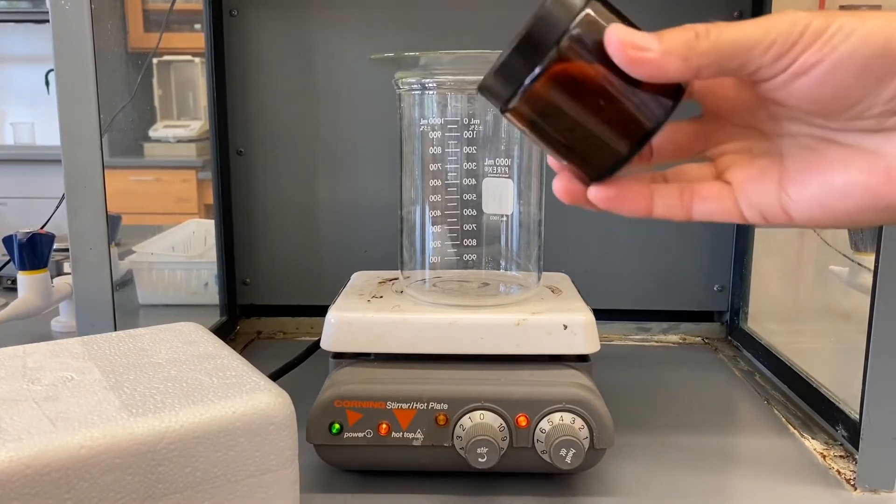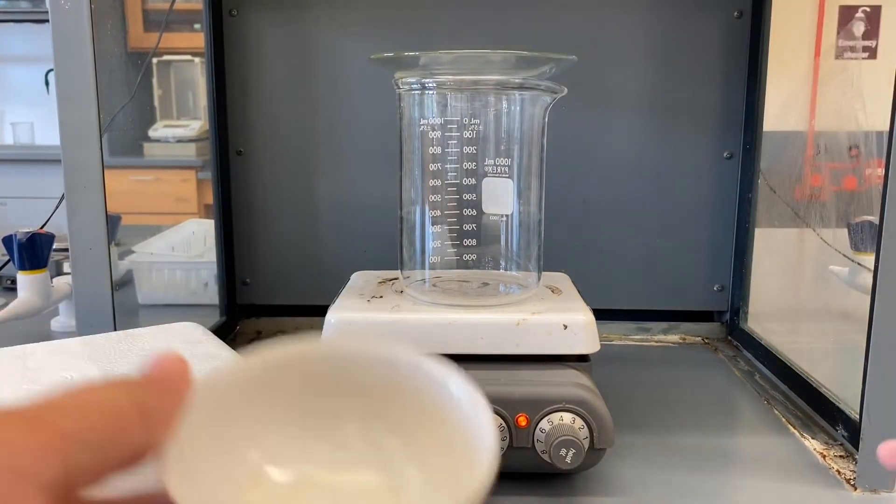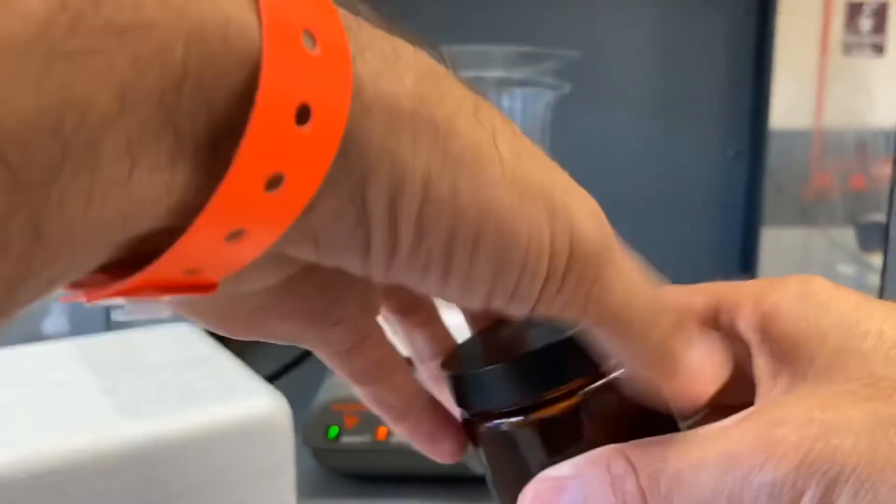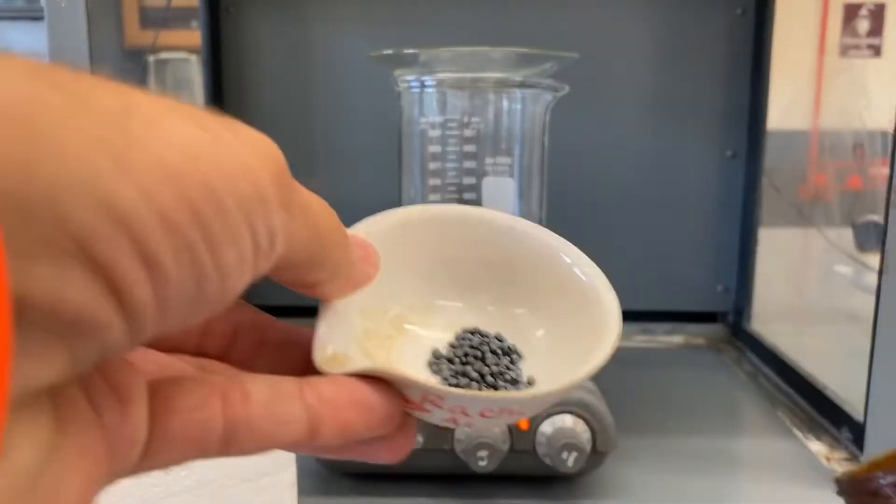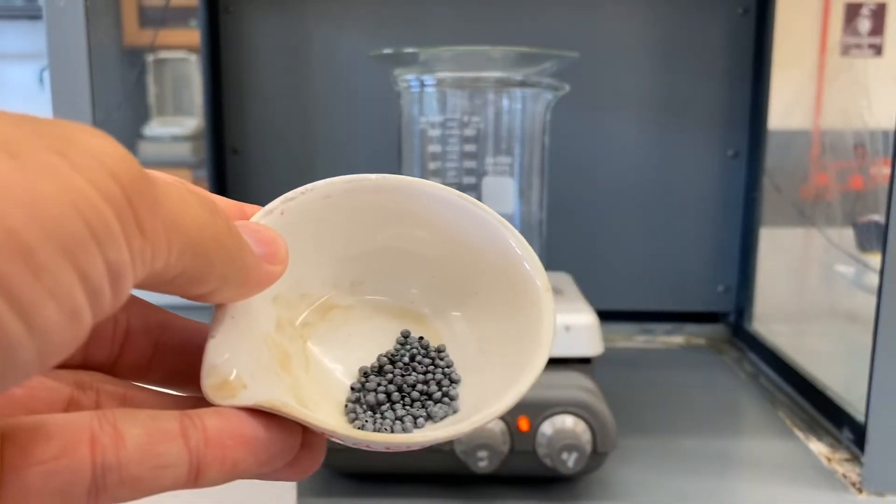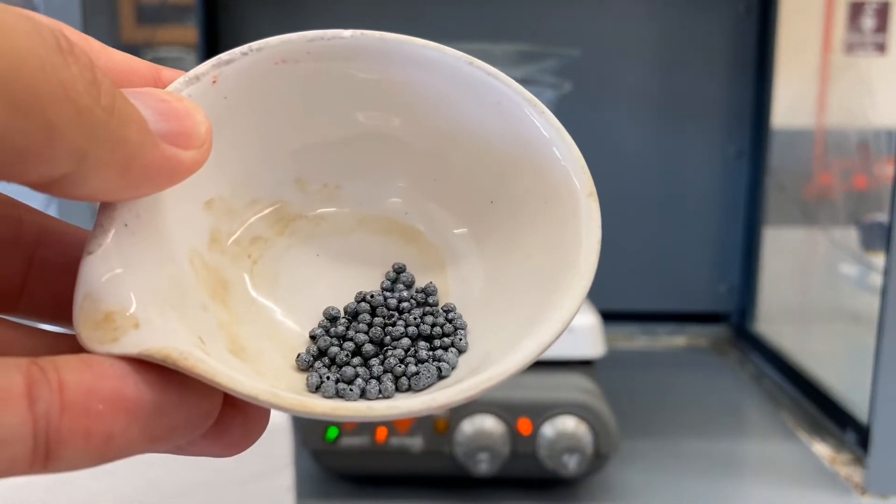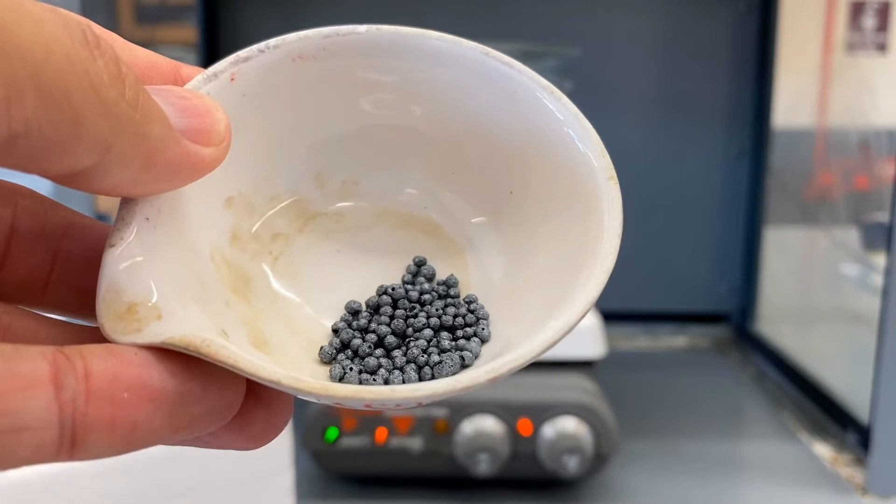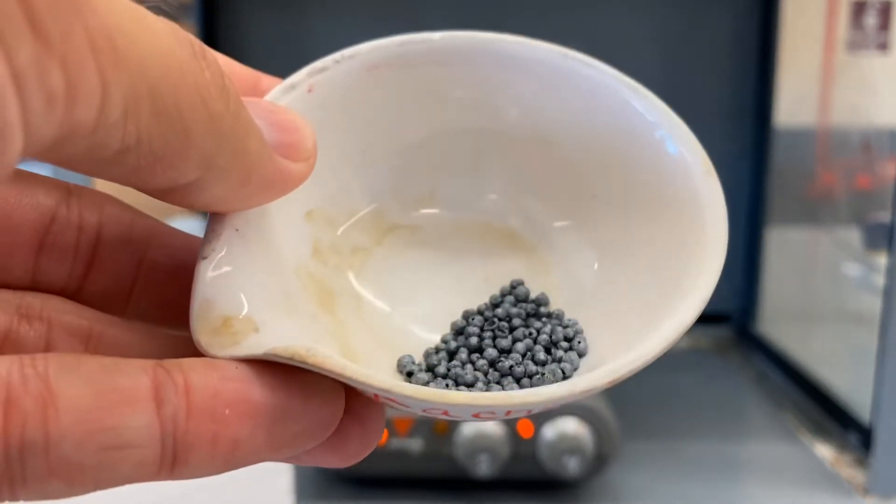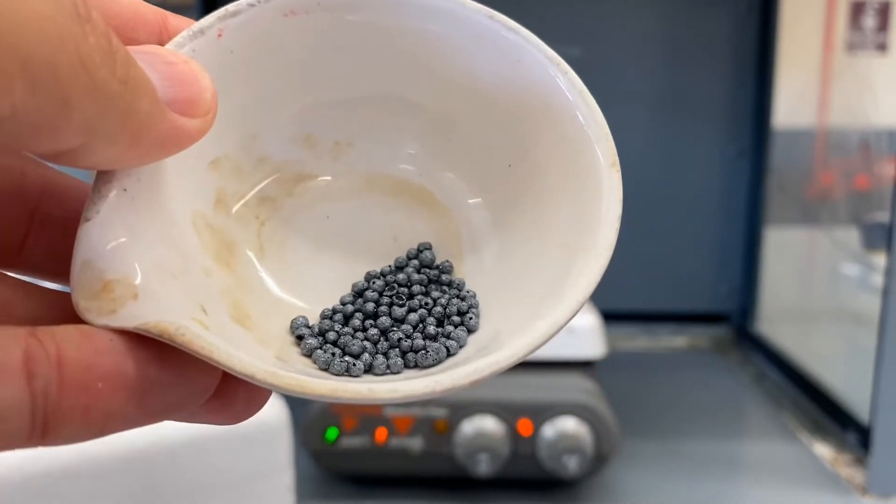And we're going to be experimenting with this element. I'll pour some of it out so you can see it. There you go. They have kind of a bluish purple tinge color to them. Solid, kind of sparkly. I don't know if you can see that in the video, but they're shiny.